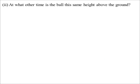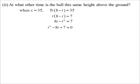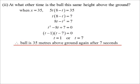At what other time is the ball the same? Well, let's solve when x equals 35. A little quadratic to solve. Multiplies together to give 7, adds together to give negative 8. So it's after 1 second, that's the one we've already found. But then again, after 7 seconds, it'll be 35 metres above the ground.